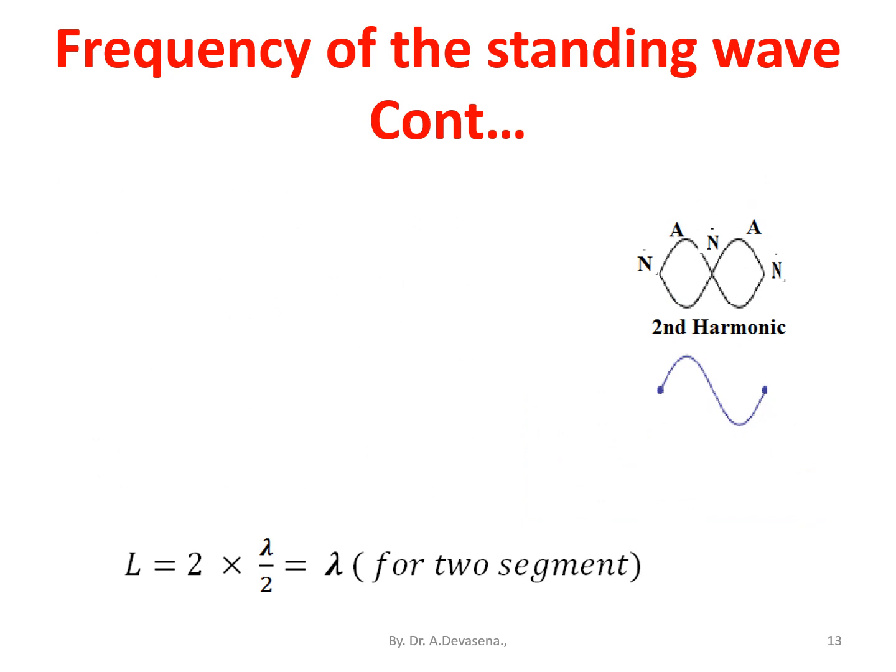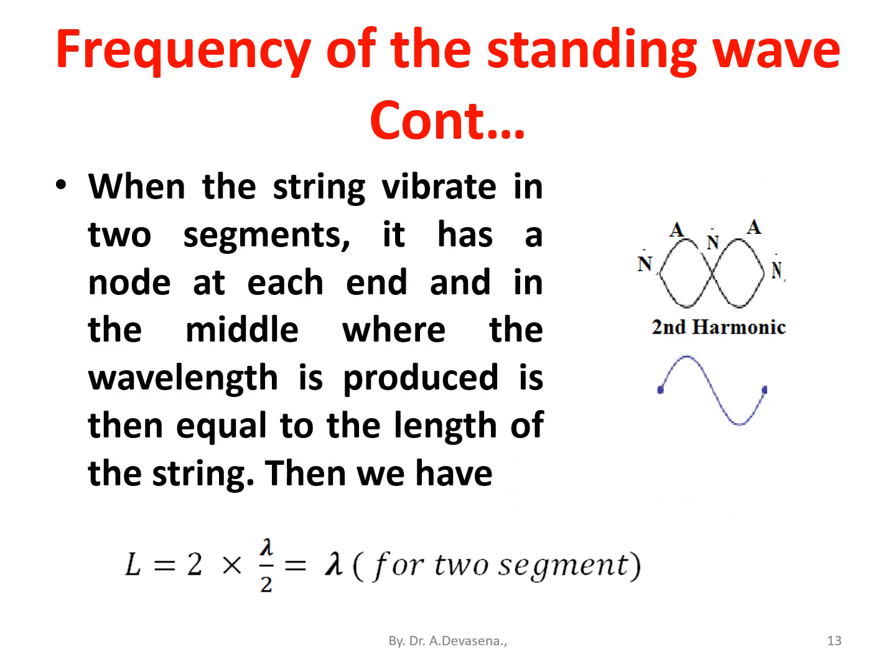When the string vibrates in two segments, it has a node at each end and in the middle. The wavelength produced is then equal to the length of the string. Then we have L = 2 × λ/2, that is equal to λ for two segments.